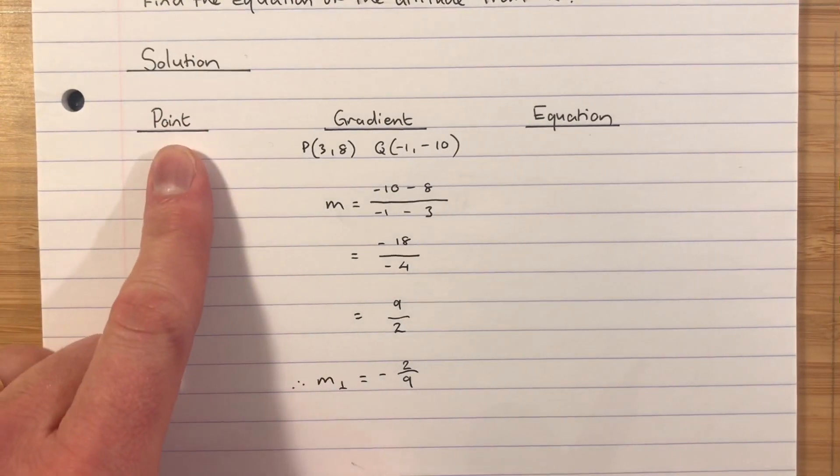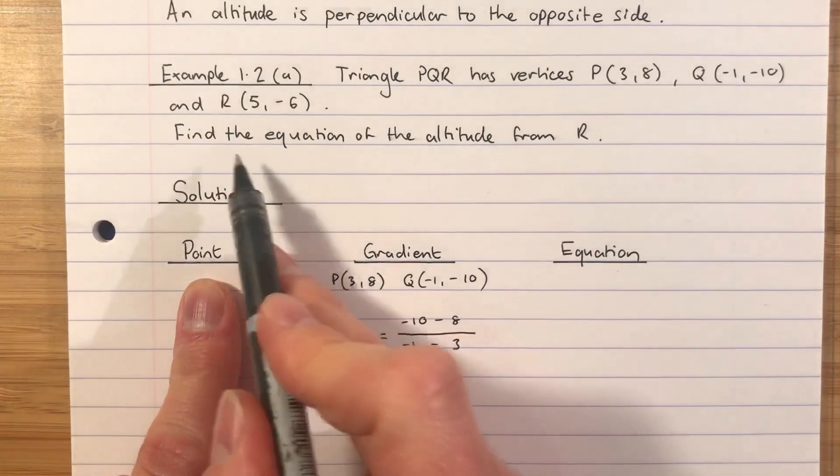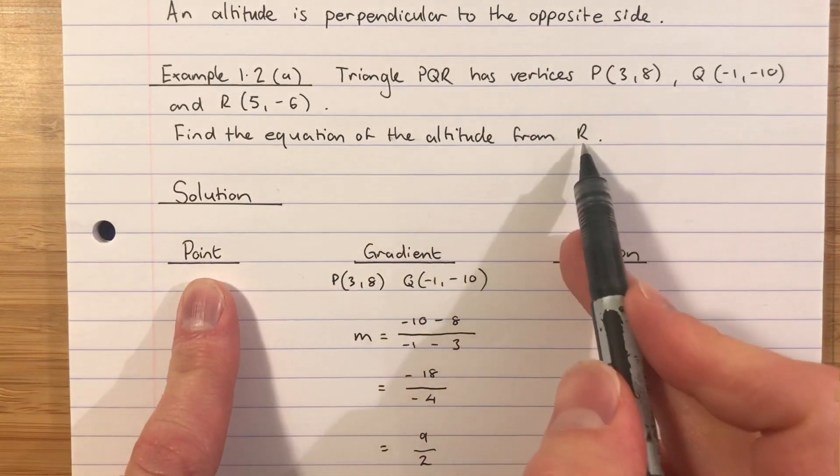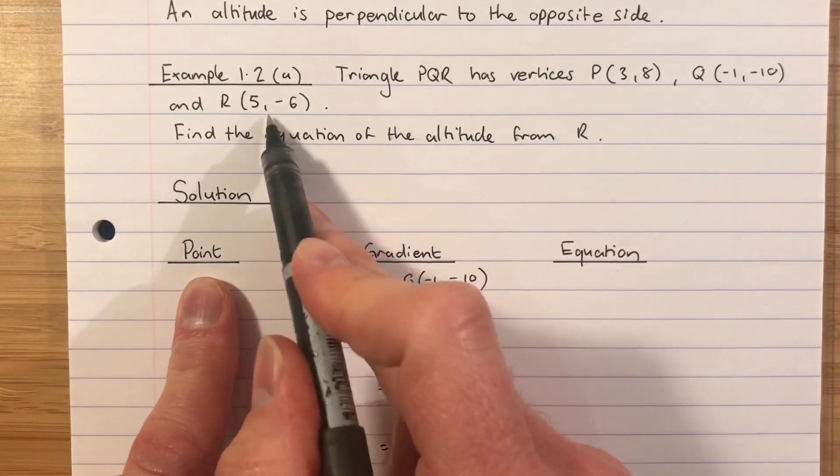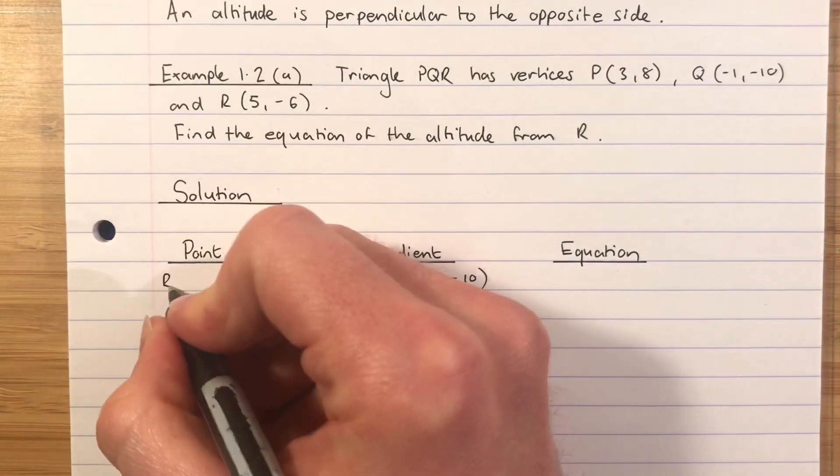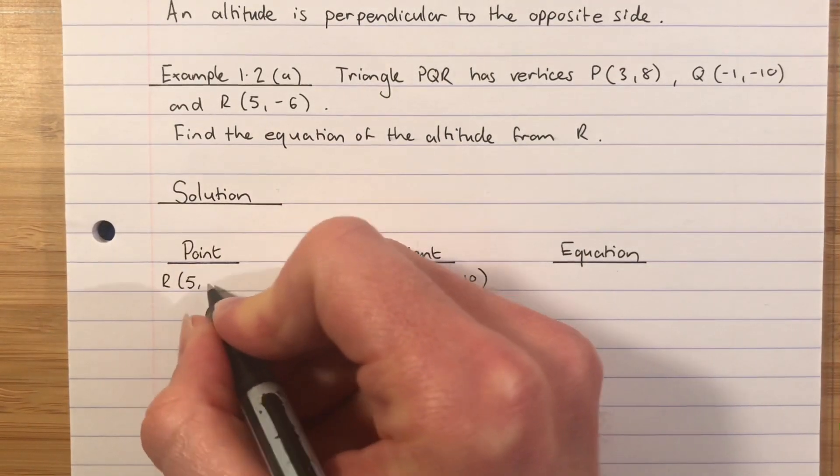What about my point? Well, let's just simplify things. Find the equation of the altitude from R. If it's from R, it goes through point R. So we'll use (5,-6). R is (5,-6) is our point.